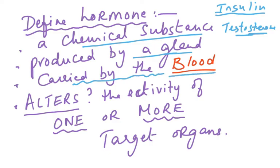The hormone is carried by the blood to another distant organ where it alters the activity of one or more target organs. It can be one organ or many organs. Like the growth hormone affects the whole person — bones grow, muscles grow, nerves grow, blood vessels grow, skin grows — so it has many target organs. But insulin, produced in the pancreas, only works on the liver cells and muscle cells. So we need to know which hormones are produced where and which target organs they affect.